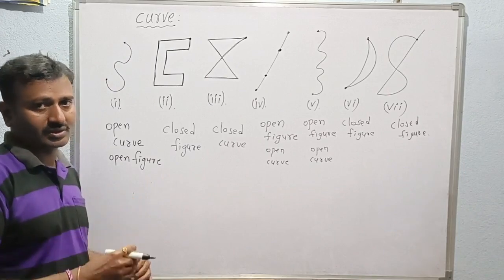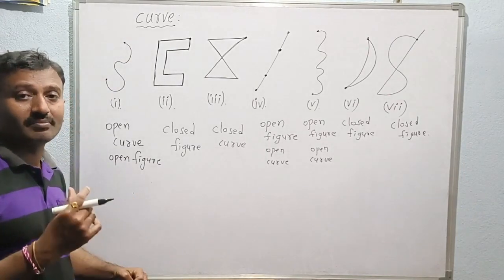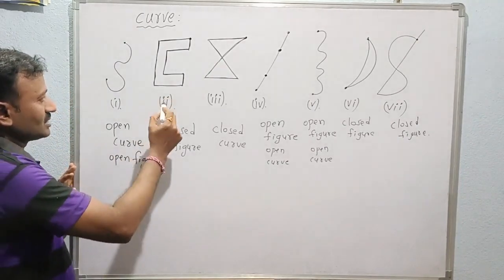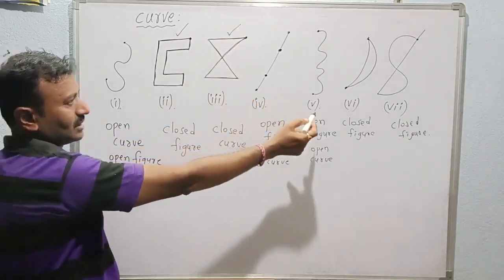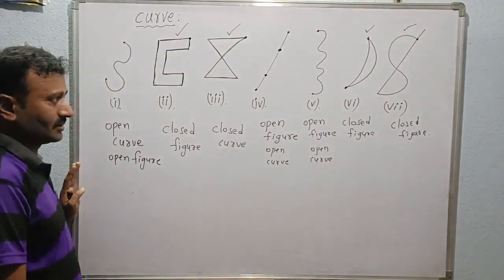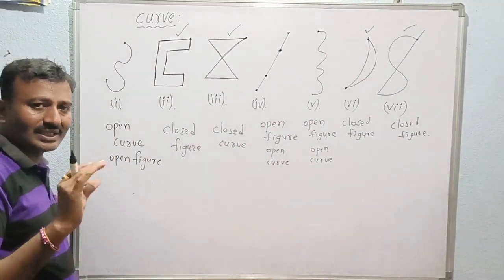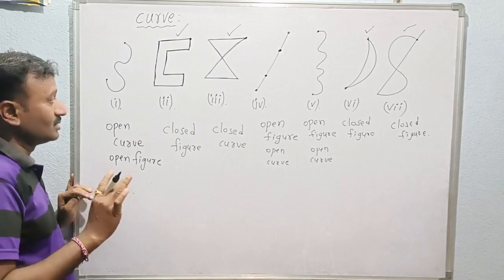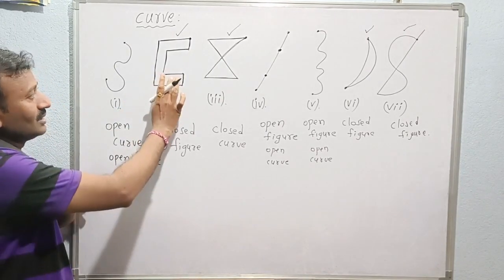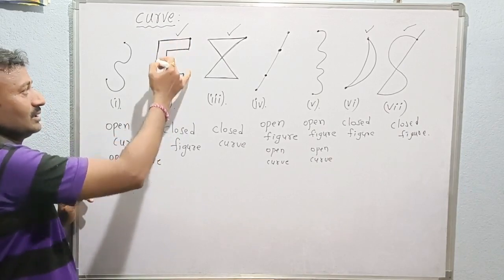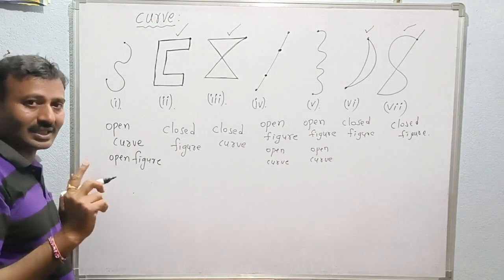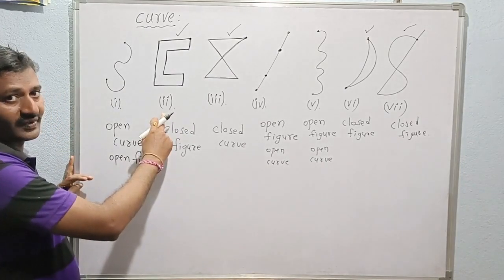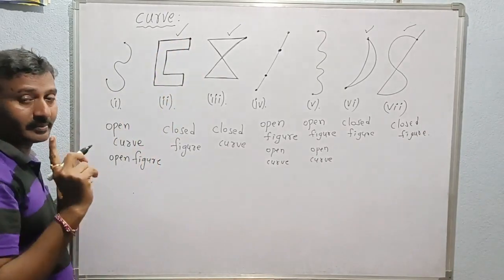Now we know what is an open curve and what is a closed curve. Next we will discuss simple closed figures. Among the closed figures, we select figures two, three, six, and seven. A simple closed figure should intersect at only one point — the starting point — and should not intersect itself anywhere else. Figure two is a simple closed figure because the starting point and ending point meet at only one point and it does not touch or intersect anywhere else.